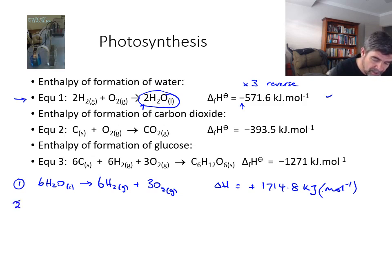The second equation is also not written the way we want it to be. We want the carbon dioxide to be over here on the reactant side. We also want six carbon dioxides. So therefore, our next equation is going to have to also be reversed, but multiplied by six and reversed.